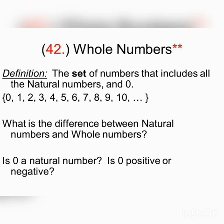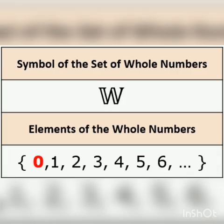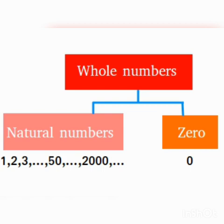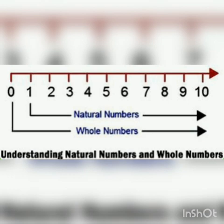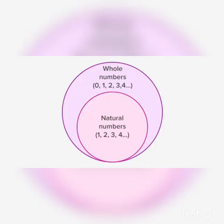Whole numbers: the set of numbers that includes all natural numbers and 0 are called whole numbers. The difference between natural numbers and whole numbers is that natural numbers start with 1, while whole numbers start with 0. Is 0 a natural number? No. Whole numbers are denoted by the letter W, with elements 0, 1, 2, 3, etc. All natural numbers are whole numbers, but all whole numbers are not natural numbers.